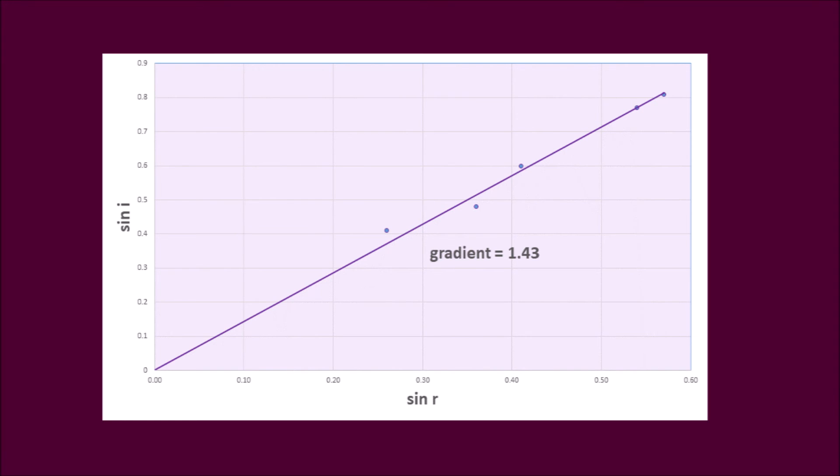Now, the gradient of this graph, at 1.43, is equal to the refractive index because the gradient of a graph is change in height divided by change in length. Well, in this case, that's sin i divided by sin r. So, we found a more precise way of finding a result for our refractive index. This also helps if we have any outliers, any data points that are really out there. This disregards them a little bit more than just taking an average.